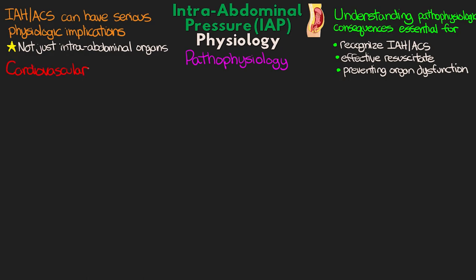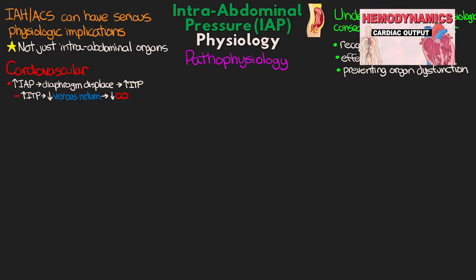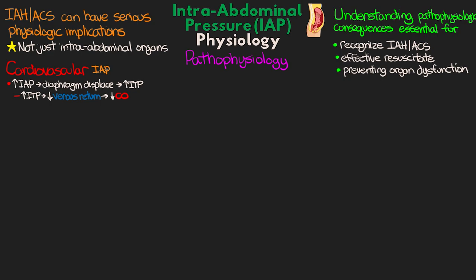First, let's talk about the cardiovascular system. An elevated intra-abdominal pressure can lead to displacement of the diaphragm and ultimately increased intra-thoracic pressure. This increased intra-thoracic pressure leads to decreased venous return and decreased cardiac output. We can actually see some reduction of cardiac output with intra-abdominal pressures as low as 10. Compounding positive pressure ventilation, especially with high PEEP or high pressure control settings like P-high and APRV, can further increase intra-thoracic pressure. Volume resuscitation here may actually have protective benefits.